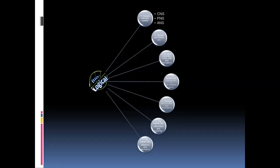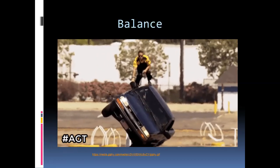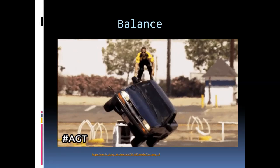In this, the seventh lesson, we continue with the nervous system. Now we're looking at the ear's role in balance, as well as certain disorders linked to the ear.